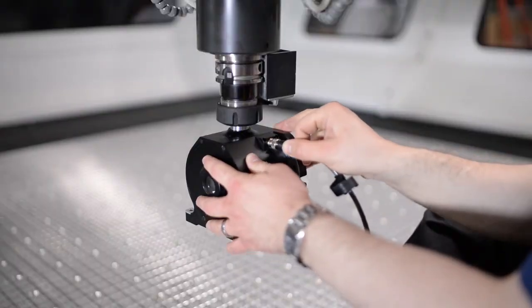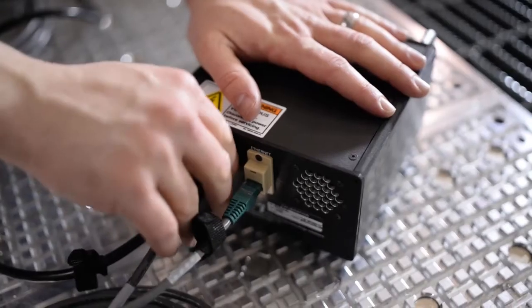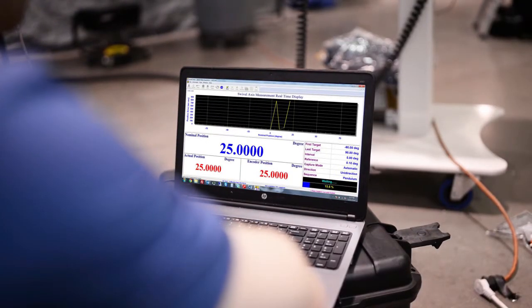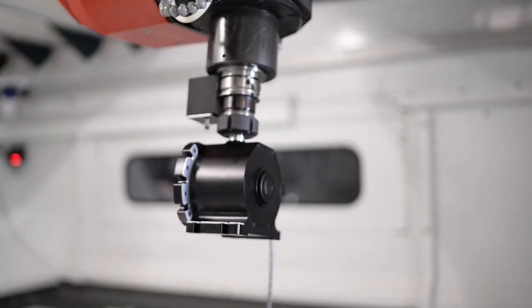Now connect the swivel check to the control box and link it to the computer. Now open the swivel check software and you're ready to begin measurement at increments of your choice.